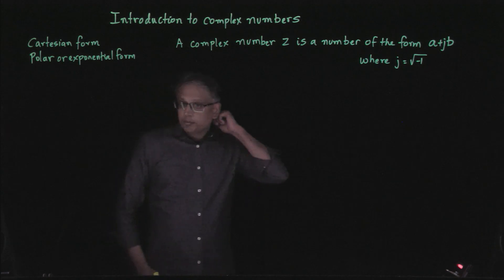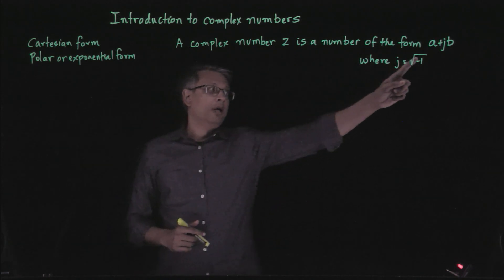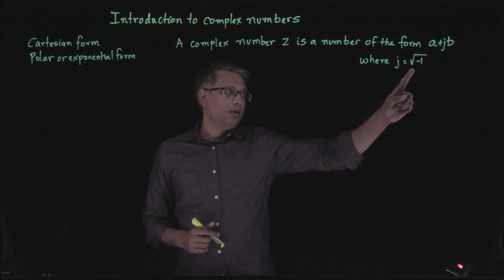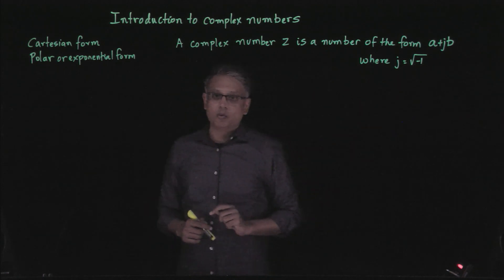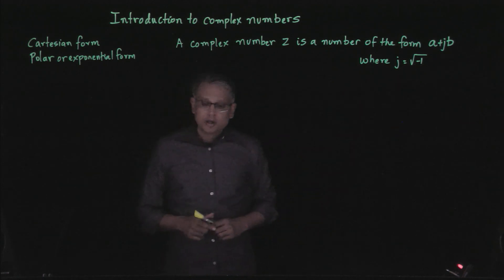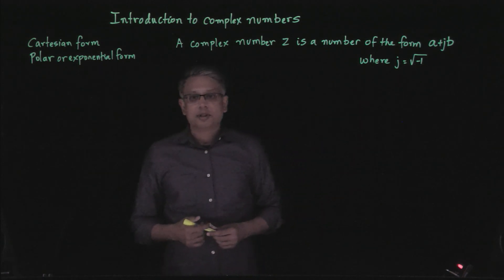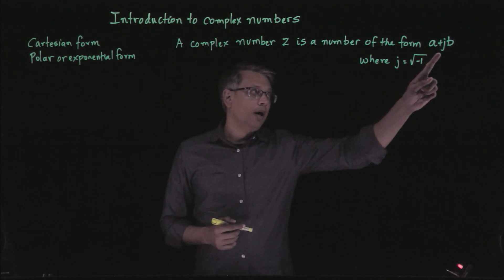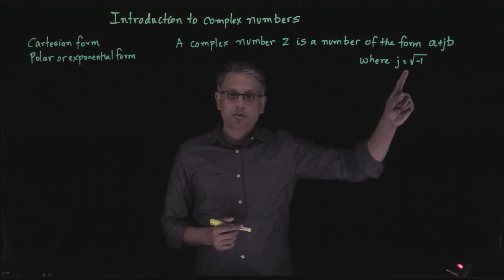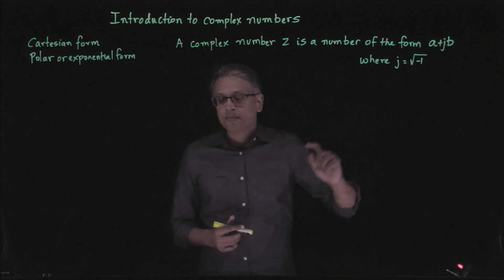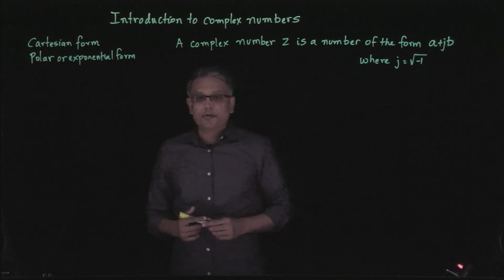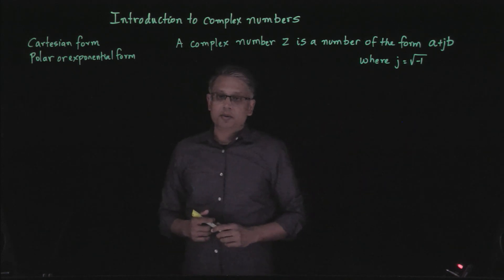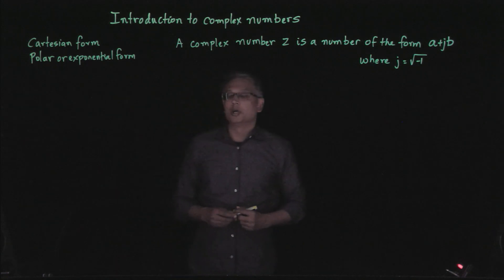A complex number is a number of the form a plus j times b, where j denotes the square root of negative 1. If you have seen complex numbers in mathematics courses you've probably used i to represent the square root of negative 1, but it's fairly common in electrical engineering to use j instead.